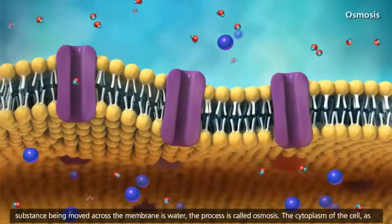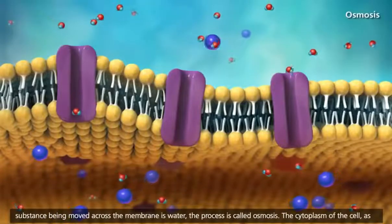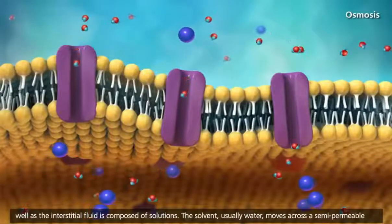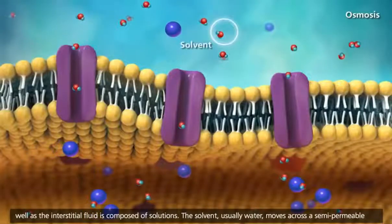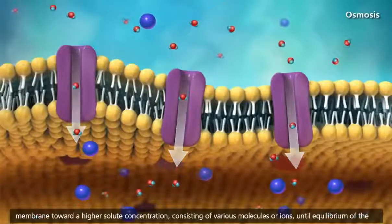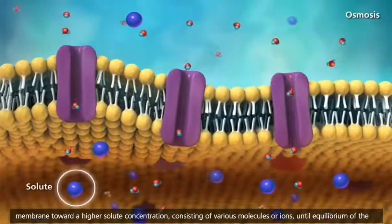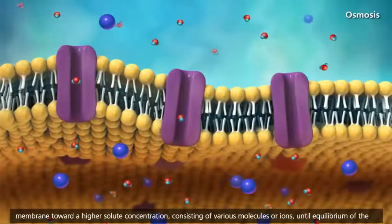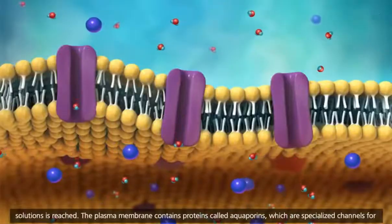The cytoplasm of the cell, as well as the interstitial fluid, is composed of solutions. The solvent, usually water, moves across a semipermeable membrane toward a higher solute concentration, consisting of various molecules or ions, until equilibrium of the solutions is reached.